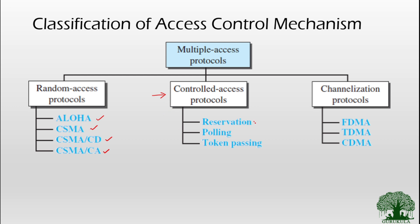The three variants are: reservation type of access control, polling type of access control, and token passing type of access control. All these types of access controls are simple to understand and we will try to understand each access control mechanism with a real-time example.